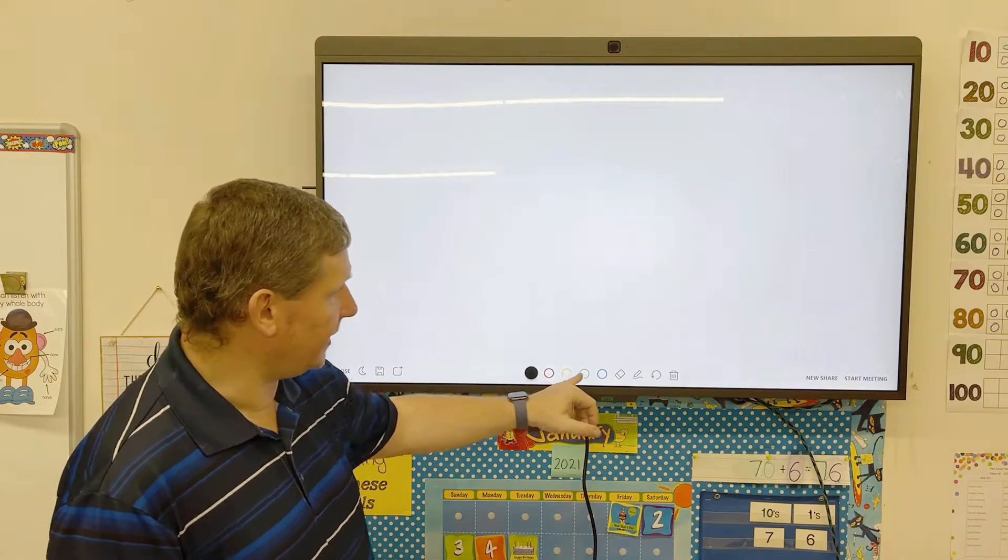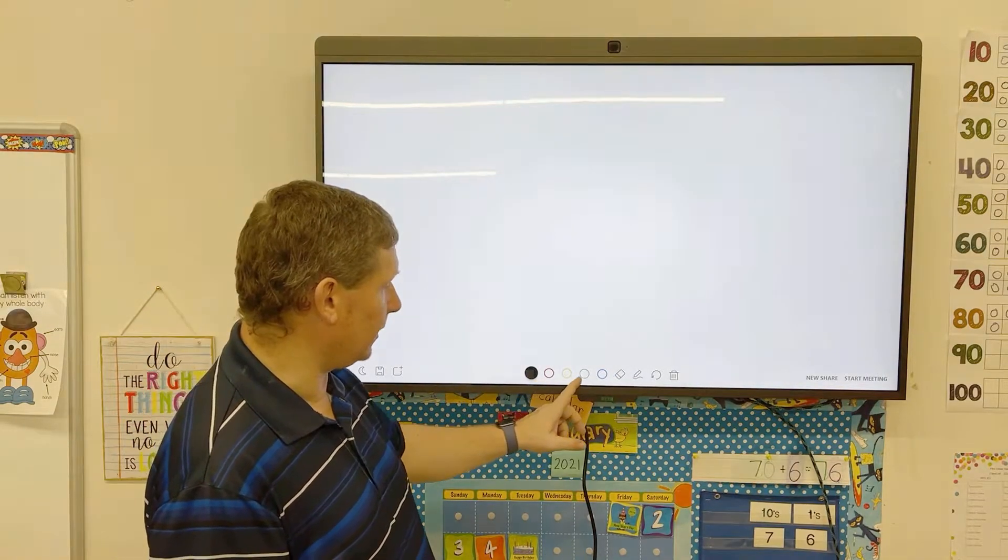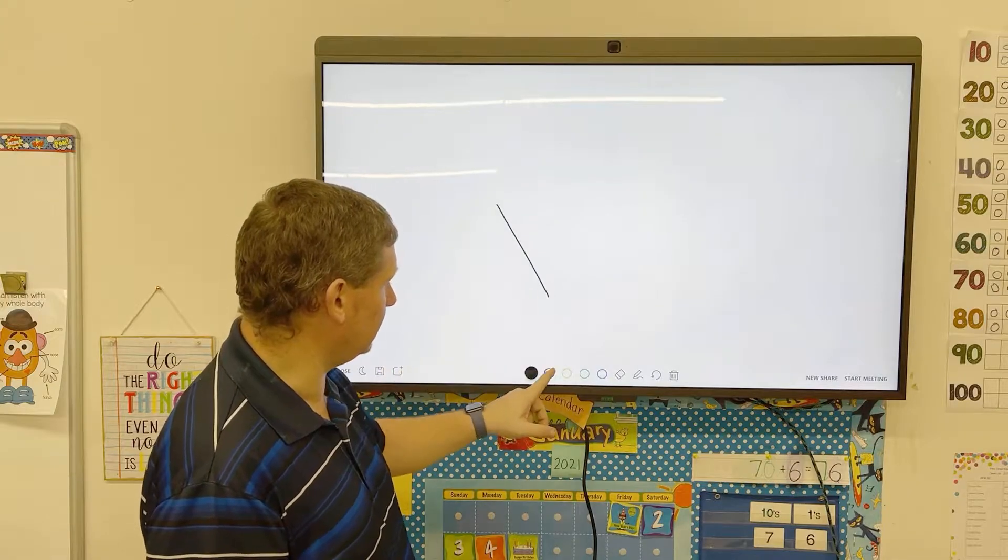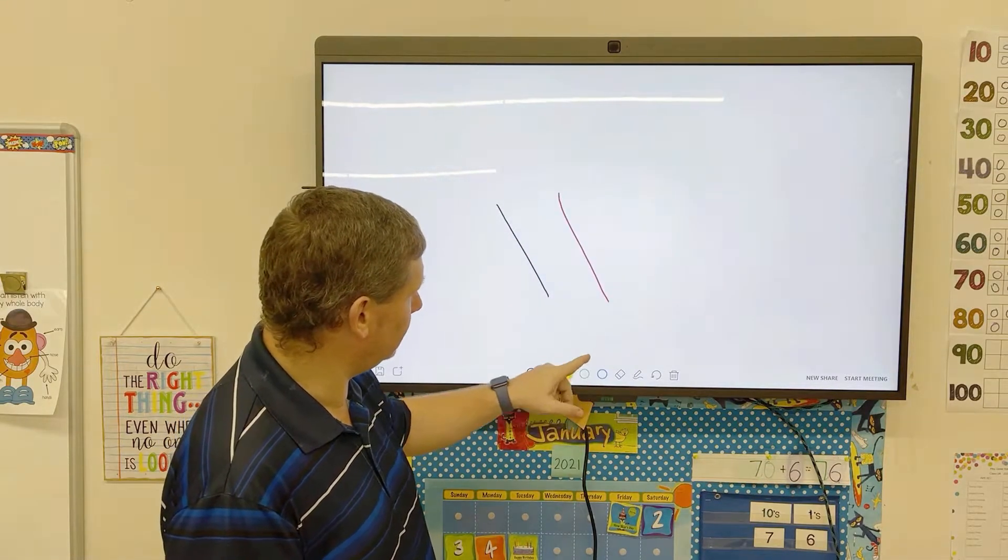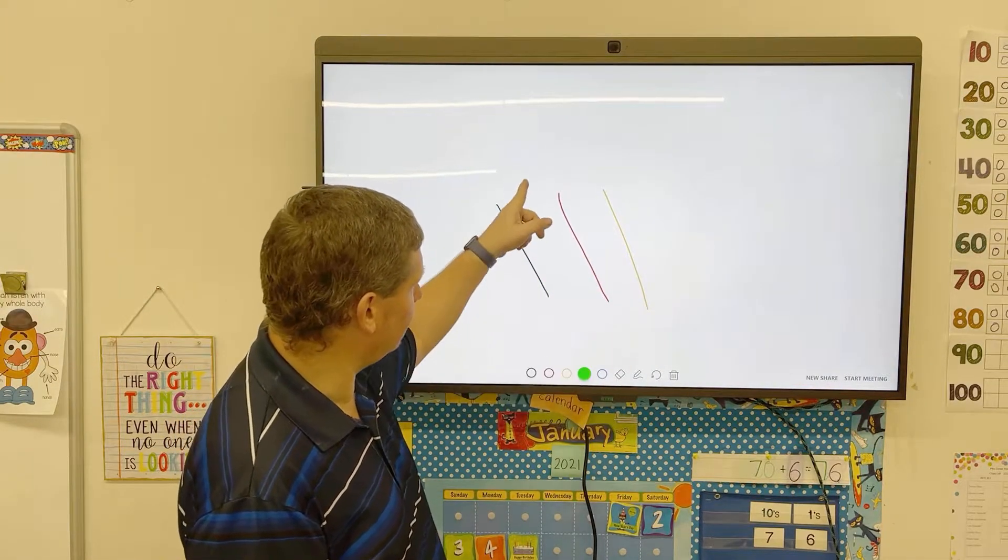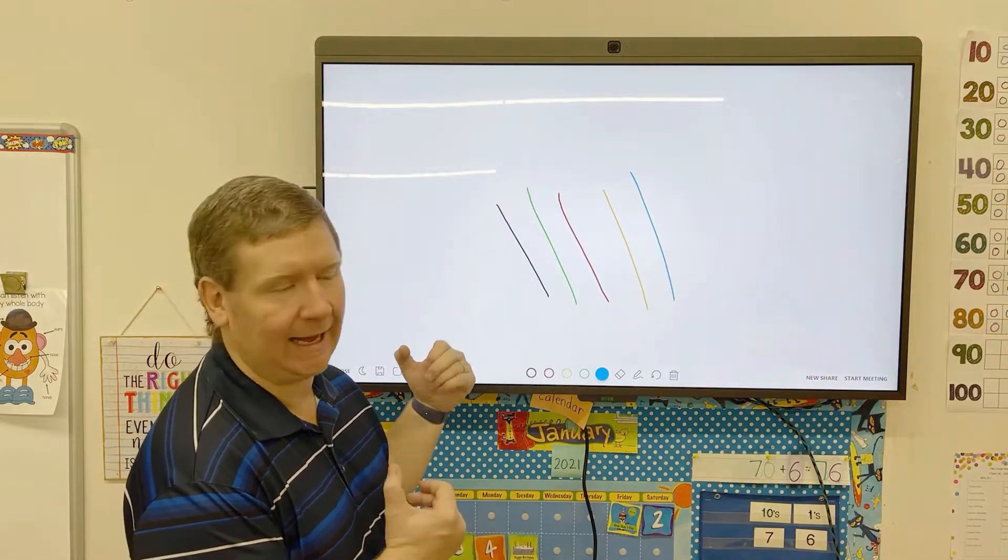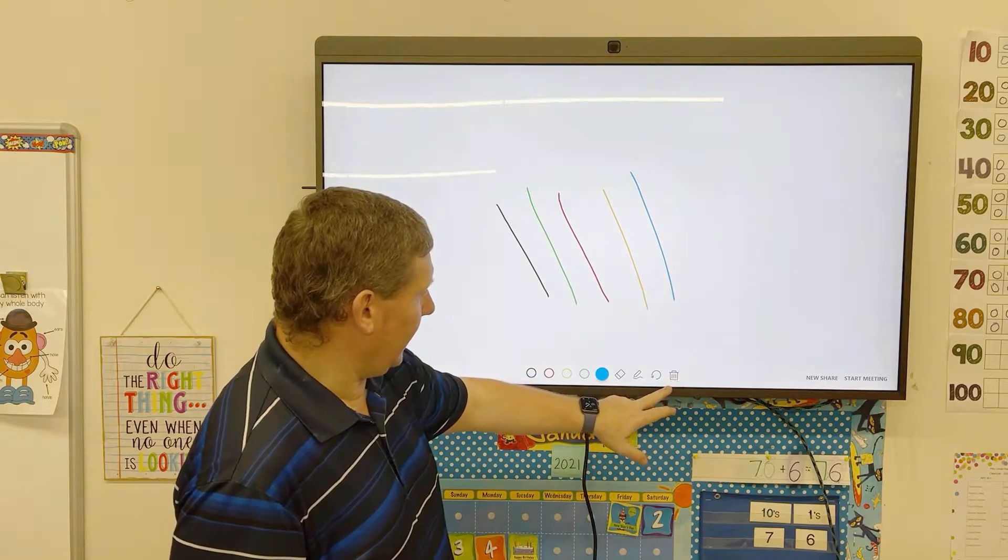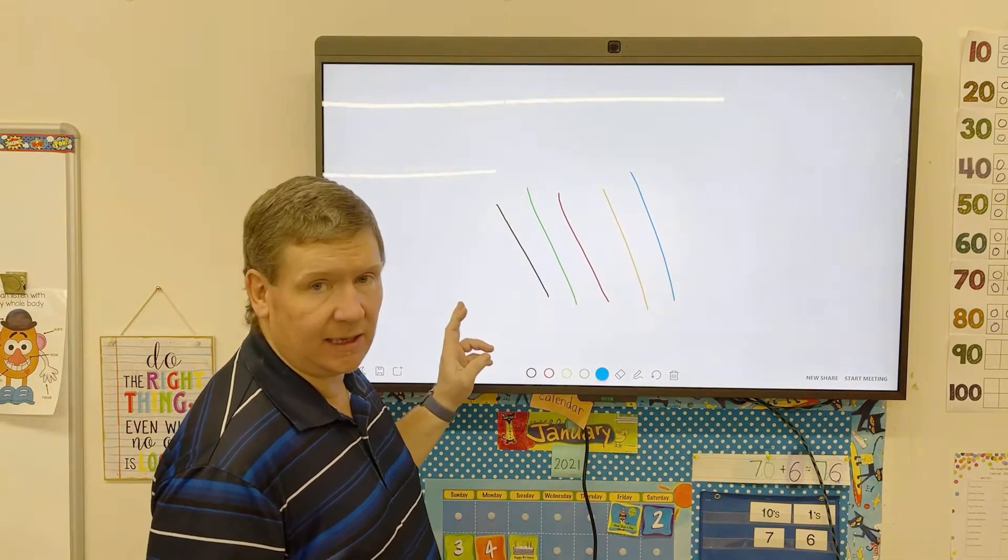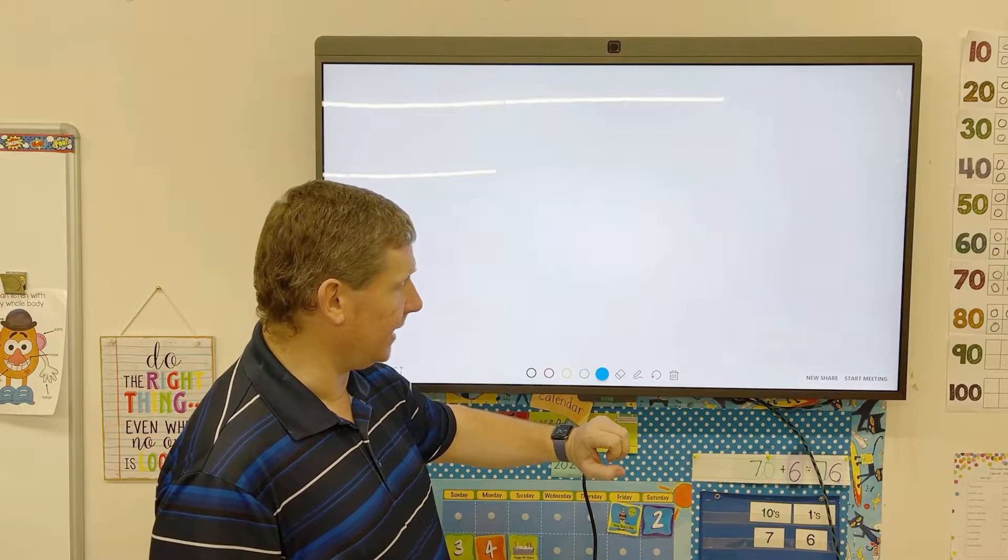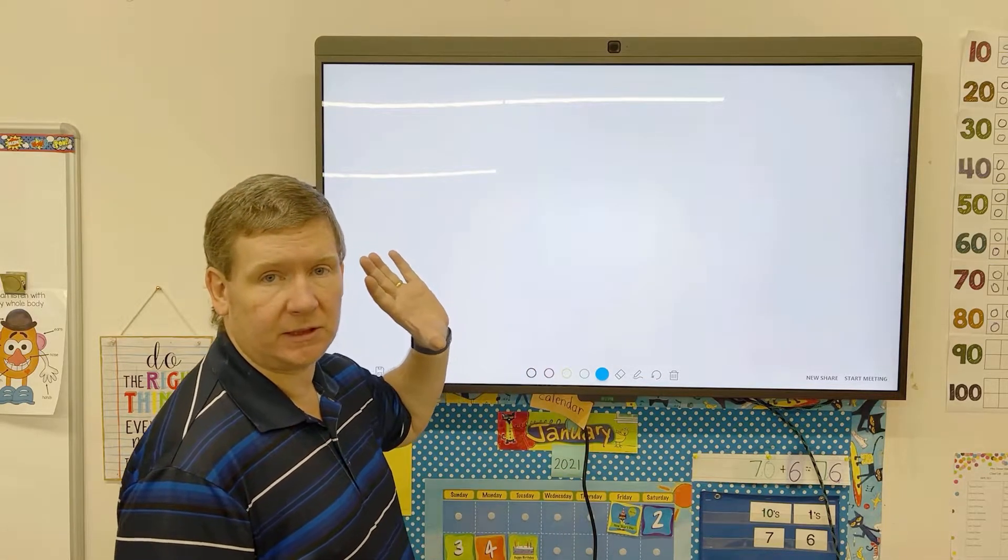You've got your color feature, so you can change the color that it draws. Just kind of nice, gives you all those different pretty colors. If you want to delete everything on the screen all at once, you'll see the little trash can icon. If you tap that, everything will disappear.